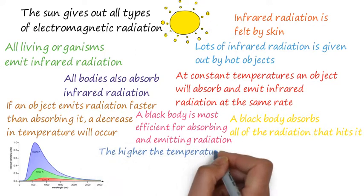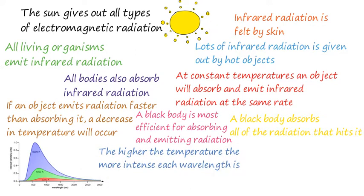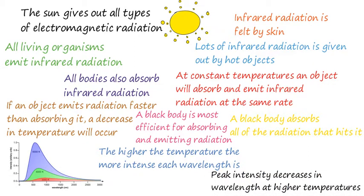Looking at how temperature links with the wavelength of radiation emitted, we can see that the higher the temperature, the more intense the radiation is at each wavelength. There is also a peak intensity, which depends upon the wavelength.